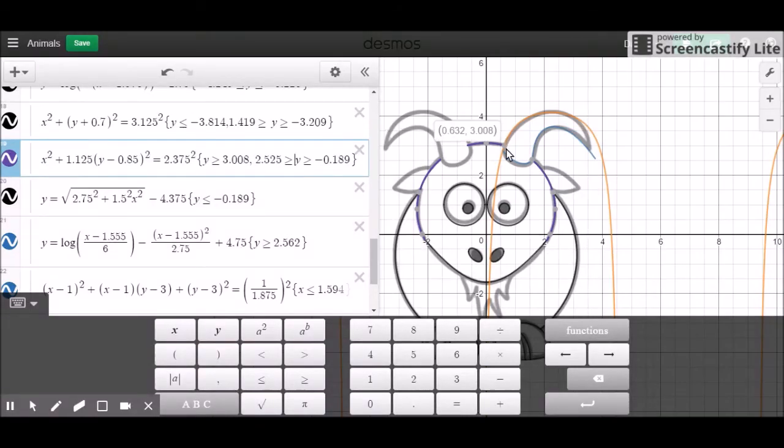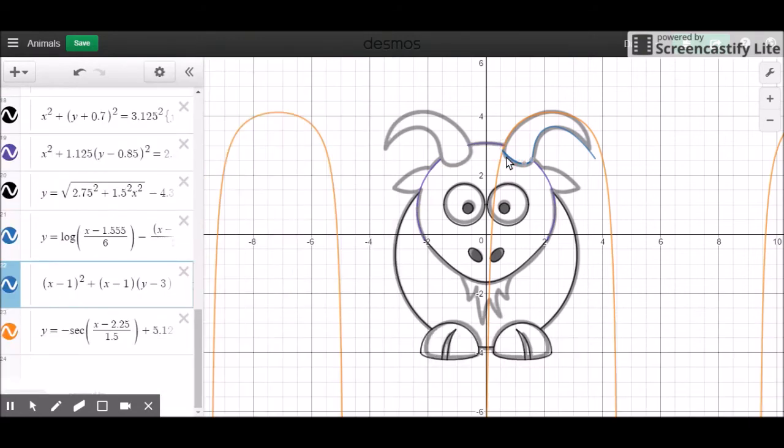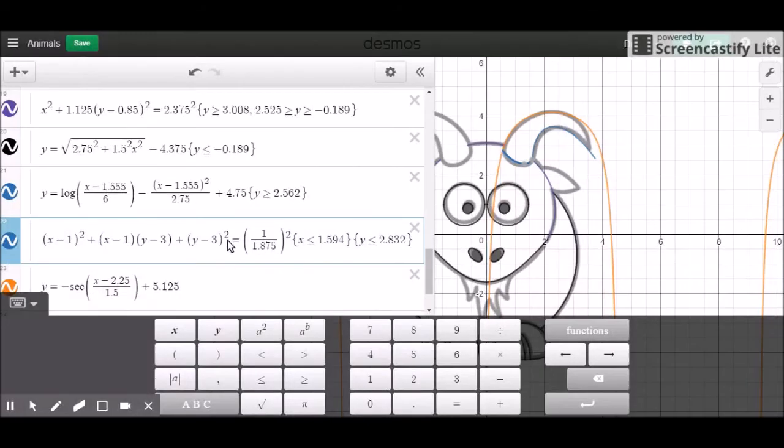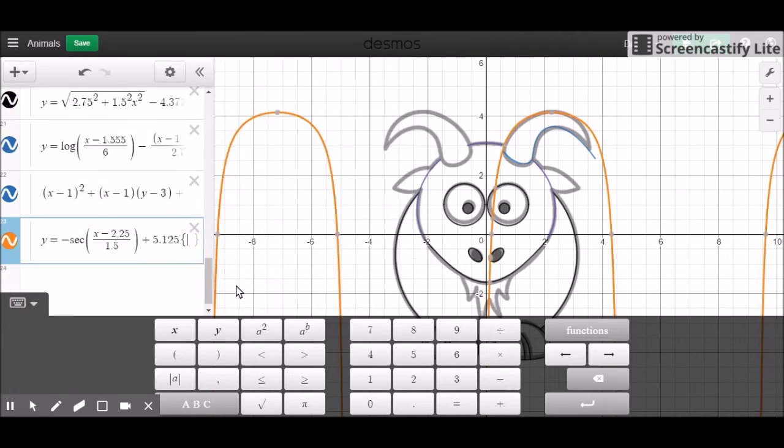And we can do the same thing over here. Okay, we can just use this number right here. So what values are we using? Okay, that's this number right here, 1.594. And 2.832, that is the highest value right here. So we can just go with that one. 2.832.